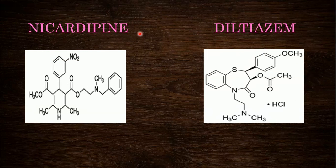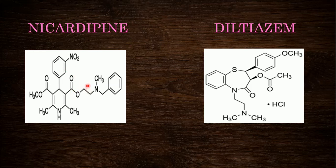Next structure is nicardipine. Nicardipine contains the 1,4-dihydropyridine ring with two methyl groups at the second and sixth positions. At the third position there is a carboxylate group attached to an ethyl group with an N-methyl group, which is attached to a phenyl ring via a methyl linkage. At the fifth position a methyl ester is present, and at the fourth position nitrobenzene is present.